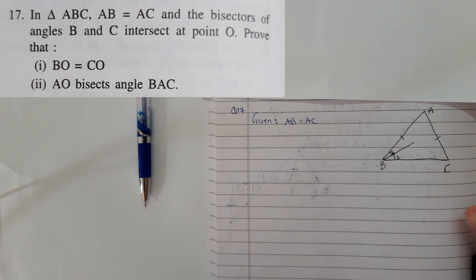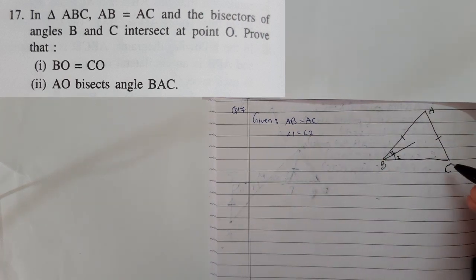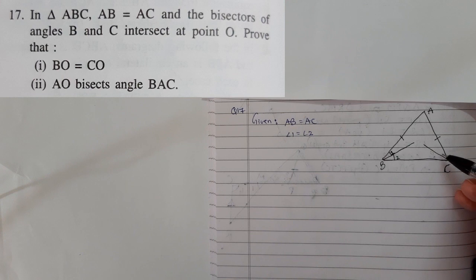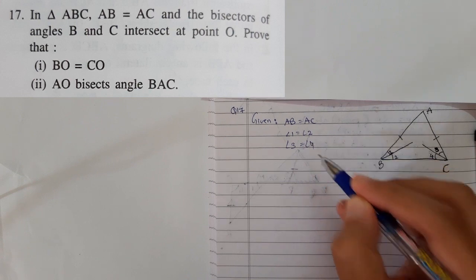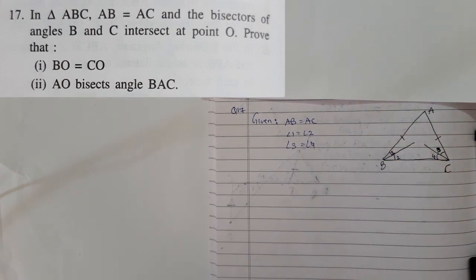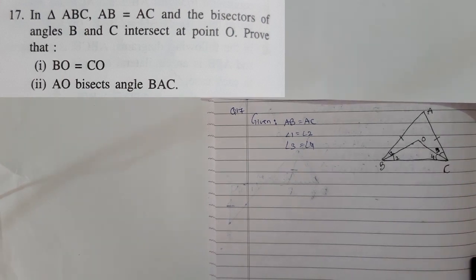So we can write angle 1 equals angle 2, and we are also bisecting angle C in two parts. Let's say it is 3 and this is 4. So angle 3 is equal to angle 4. The given information is this. Let's say they are intersecting at point O, so let them intersect. We need to prove that BO equals OC is the first part.